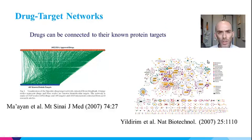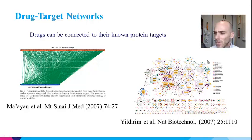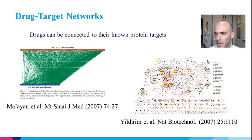All the networks discussed so far connect molecular components within cells. However, you can also connect the network of a cell to other things. Here is an example of networks that connect drugs to their molecular targets — bipartite graphs containing two types of nodes, such as FDA-approved drugs and their direct target proteins.